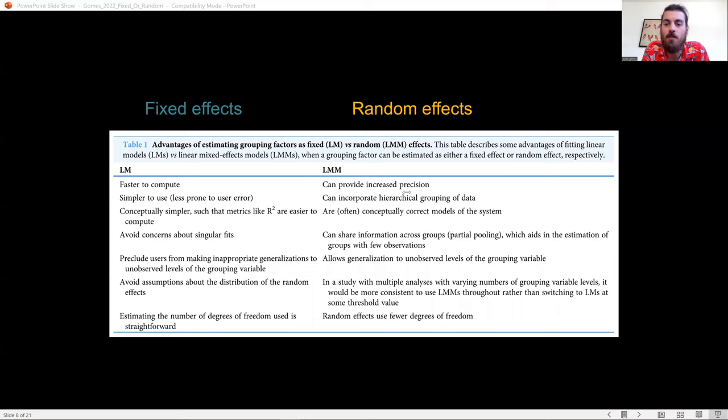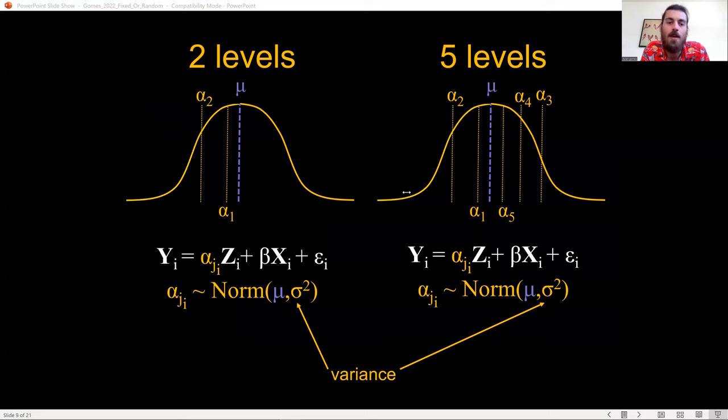If you're interested in estimating these population-level metrics, it only makes sense that you need a minimum number of levels of that random effect, especially in estimating the variance.